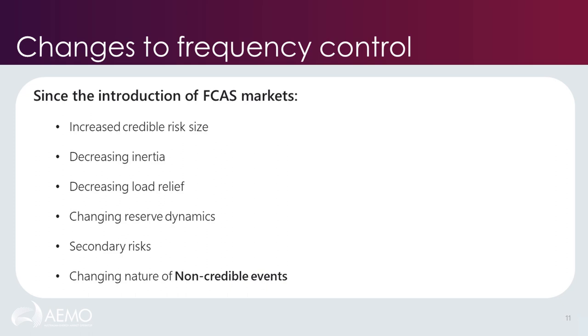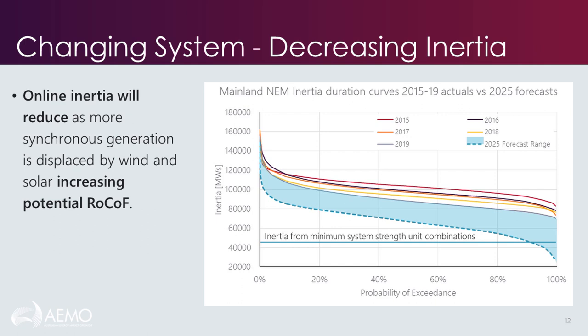We've also seen a change in the dynamics of reserve brought about by new technologies providing frequency supportive services, and the emergence of distributed PV as a secondary risk — the trip or reduction of generation that can occur alongside the trip of a large generating unit. All of these factors have changed the outcomes of credible events and feed into the potential outcomes of non-credible events. This chart shows inertia in the mainland NEM progressively declining from 2015 to 2019. The shaded blue area represents projected inertia outcomes out to 2025 from our market modelling, with multiple model sets giving different outcomes in terms of system inertia.